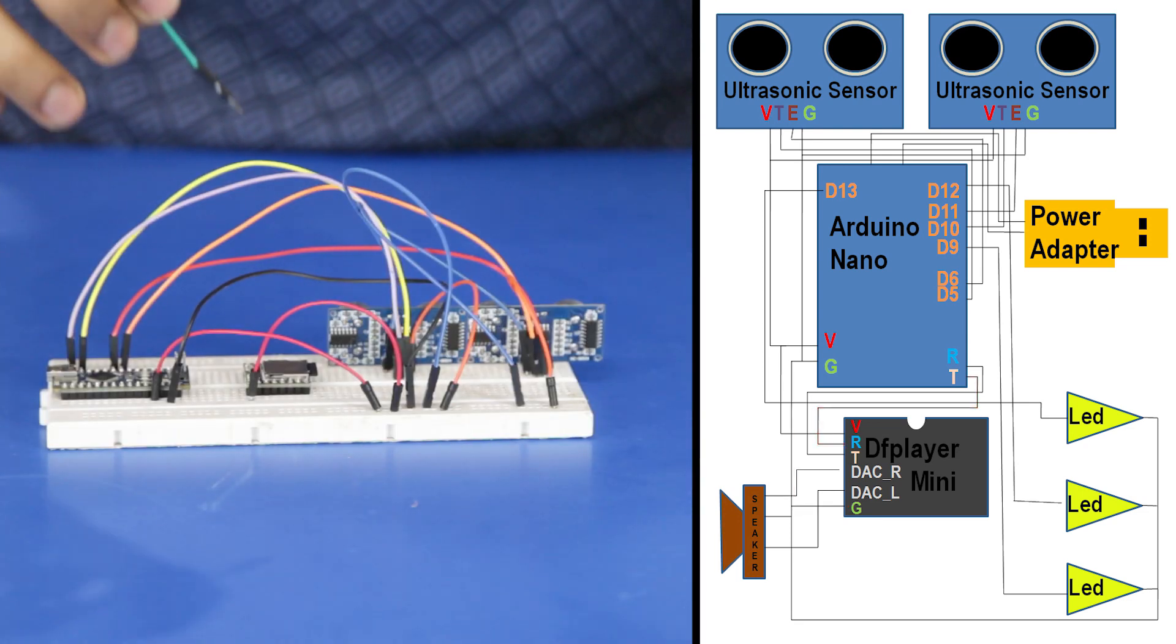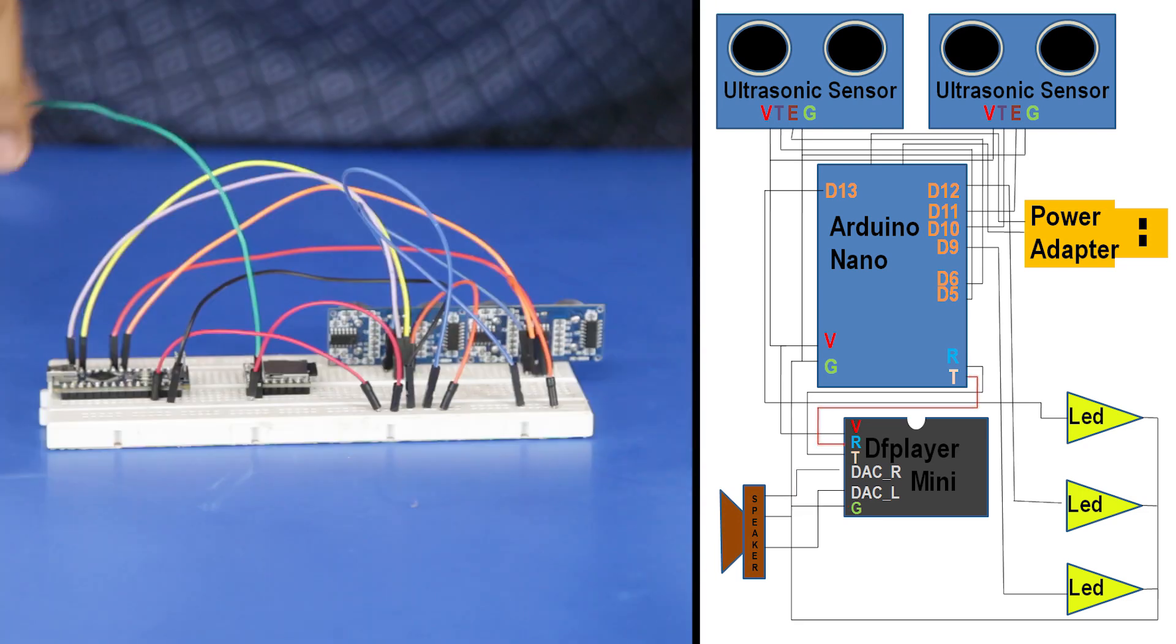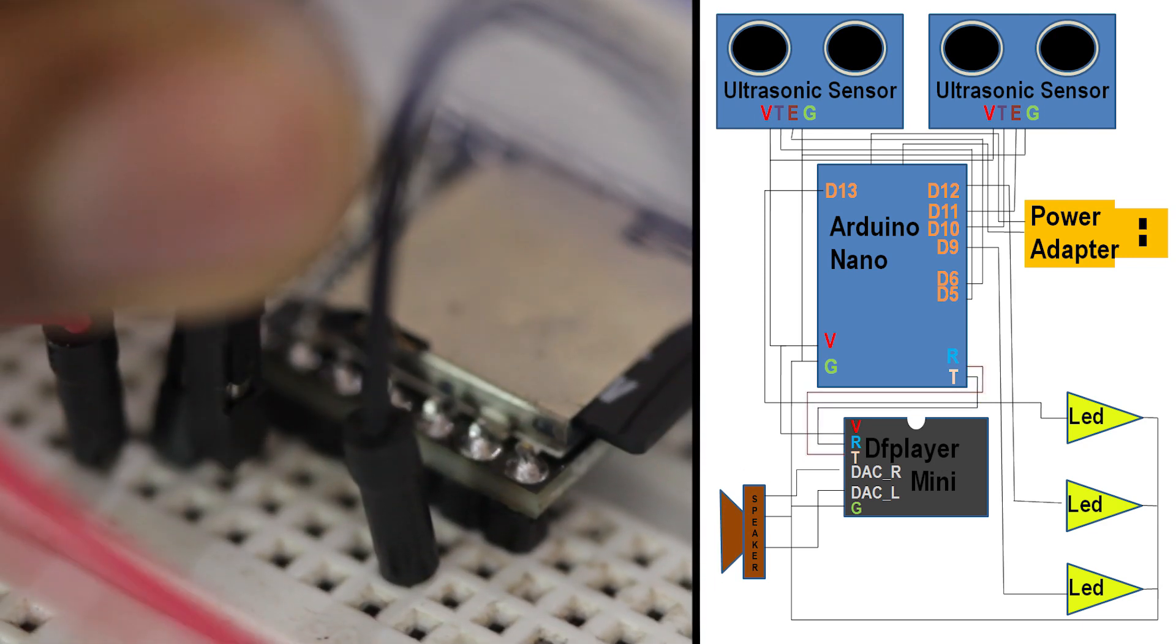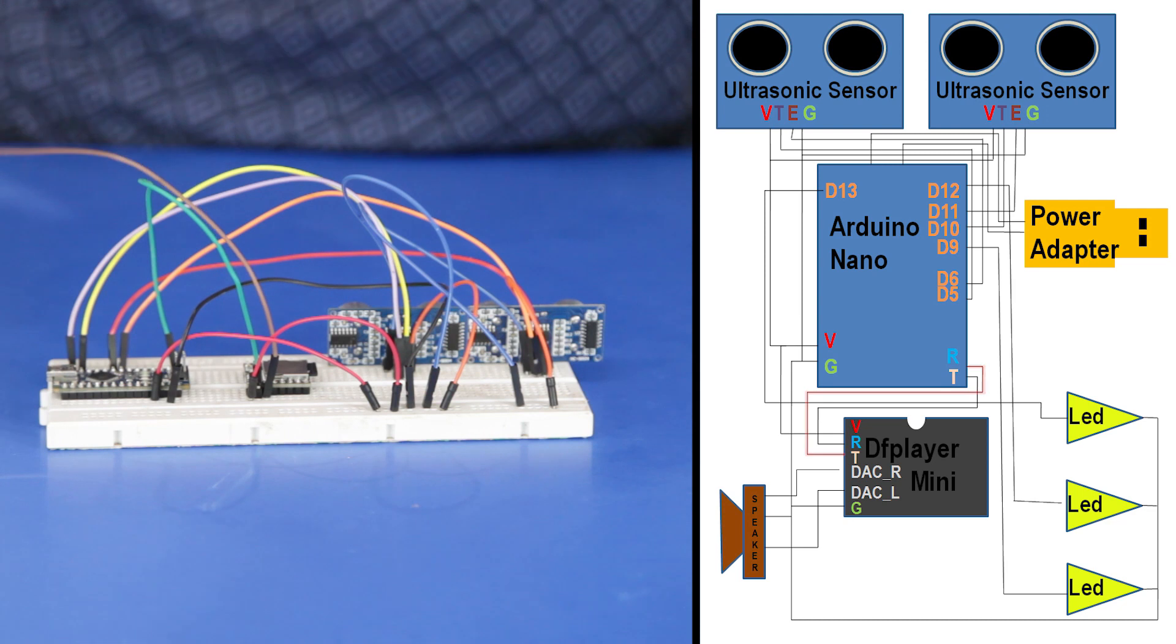For the communication between the Arduino and the player, connect the RX of the player to the TX of the Arduino and the TX of the player to the RX of the Arduino.